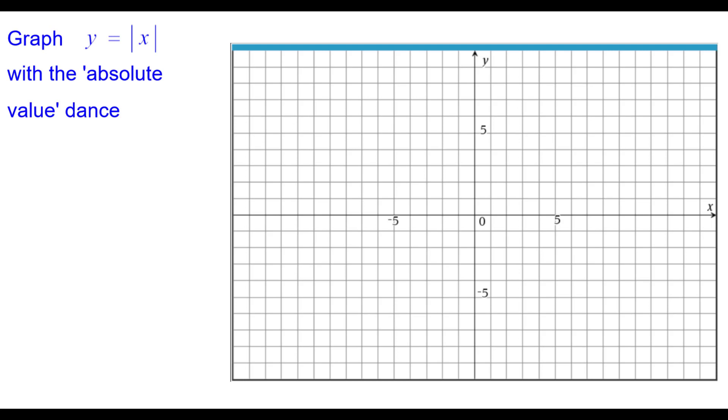Graph y equals the absolute value of x with the absolute value dance. We'll start with the initial point at the origin because the absolute value of 0 is 0.